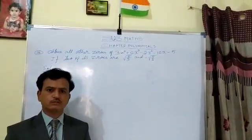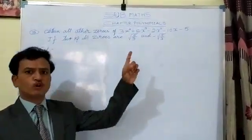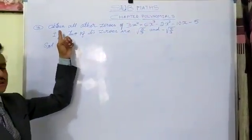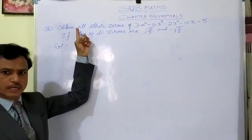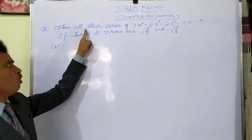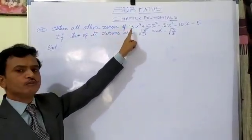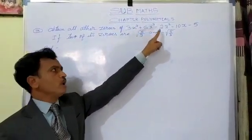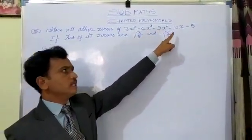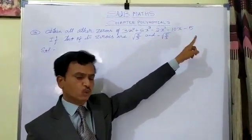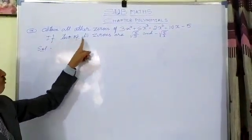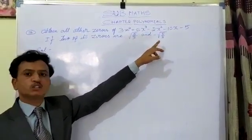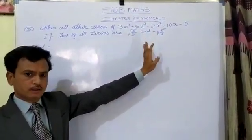Good morning children. Today in the polynomial chapter we are going to study our third question: obtain all other zeros of 3x to the power of 4 plus 6x³ minus 2x² minus 10x minus 5, if two of its zeros are square root of 5 by 3 and minus square root of 5 by 3.